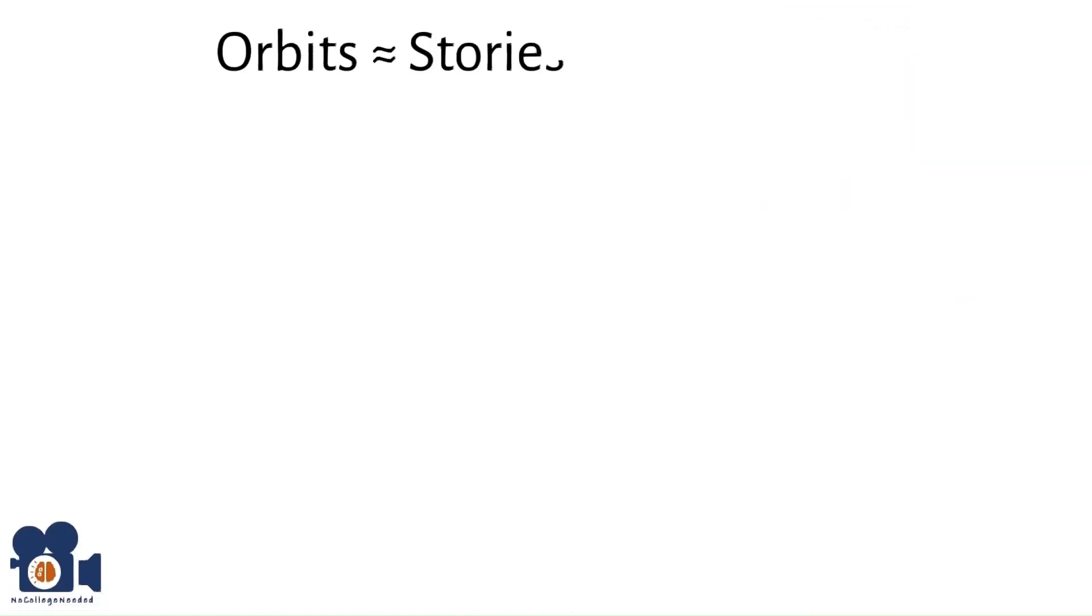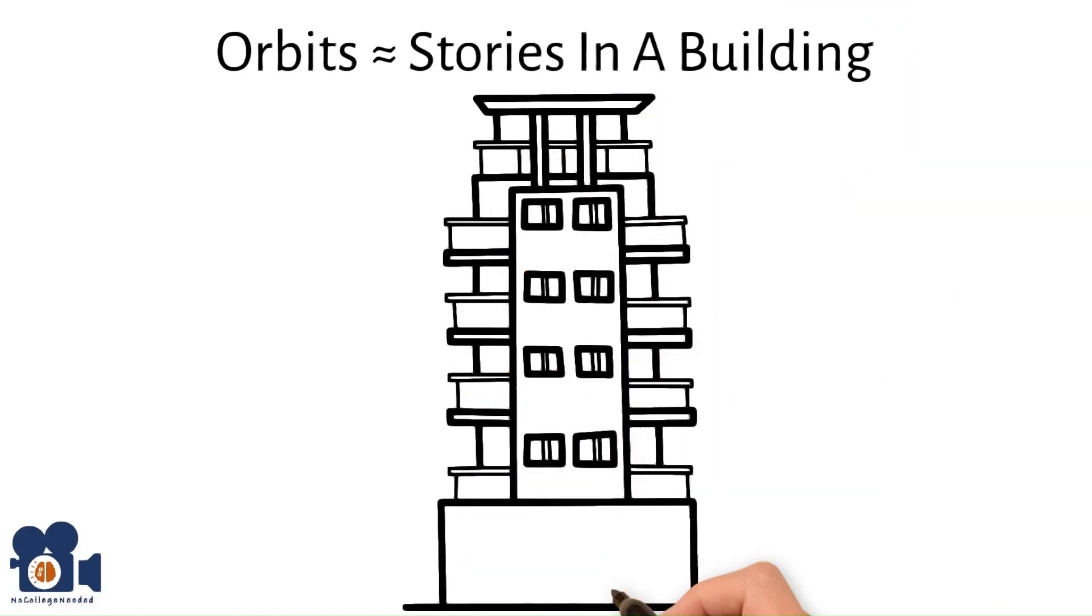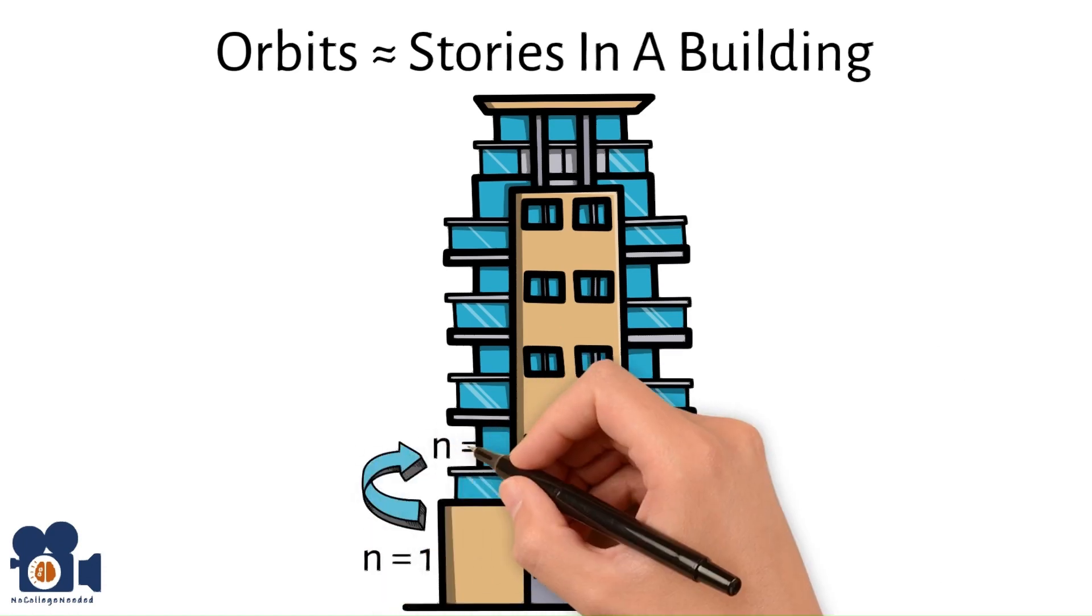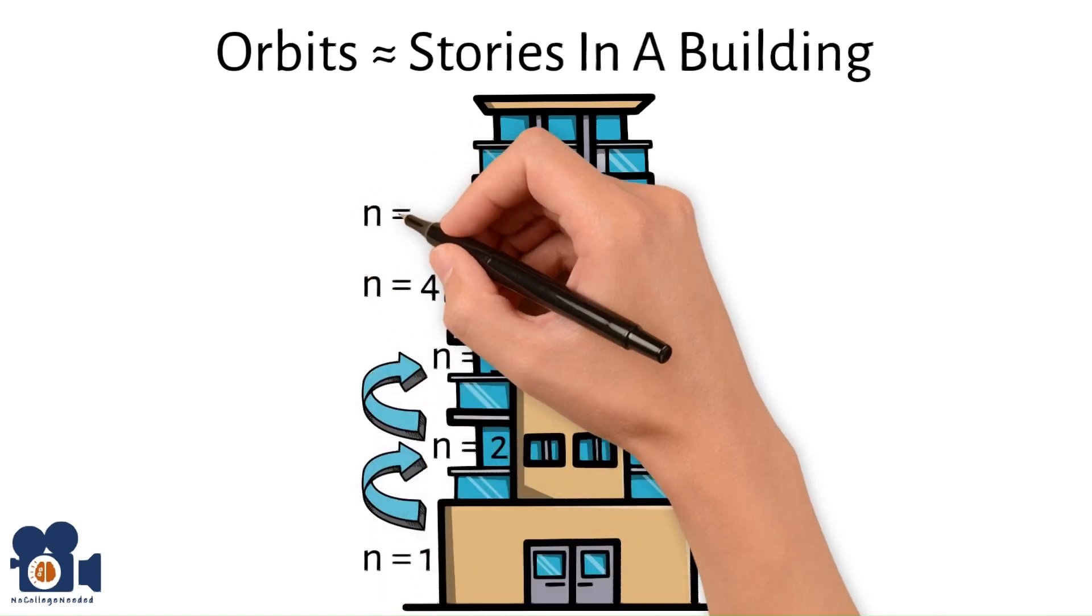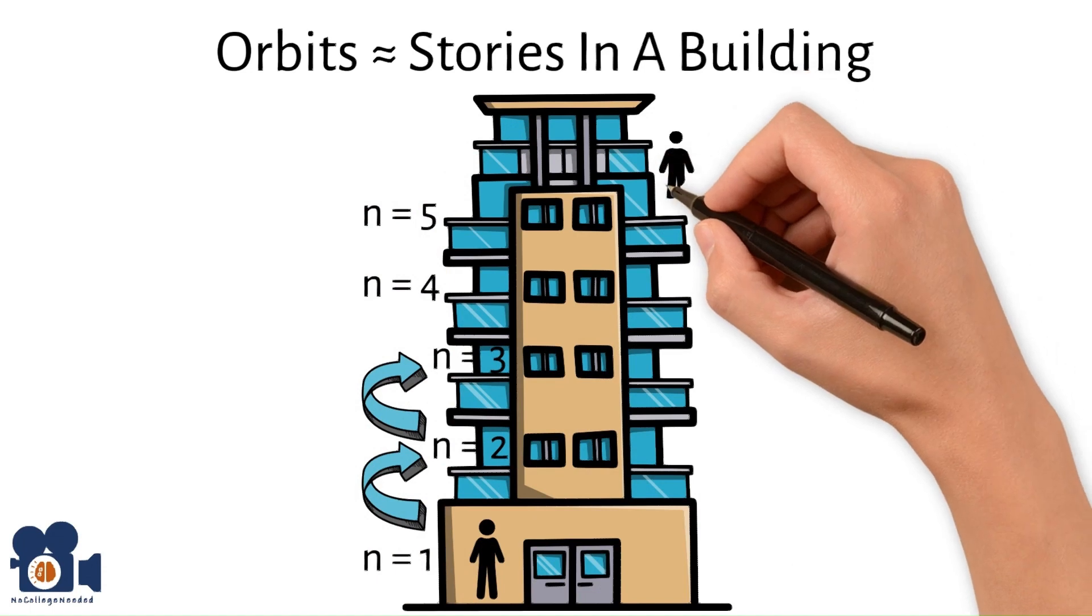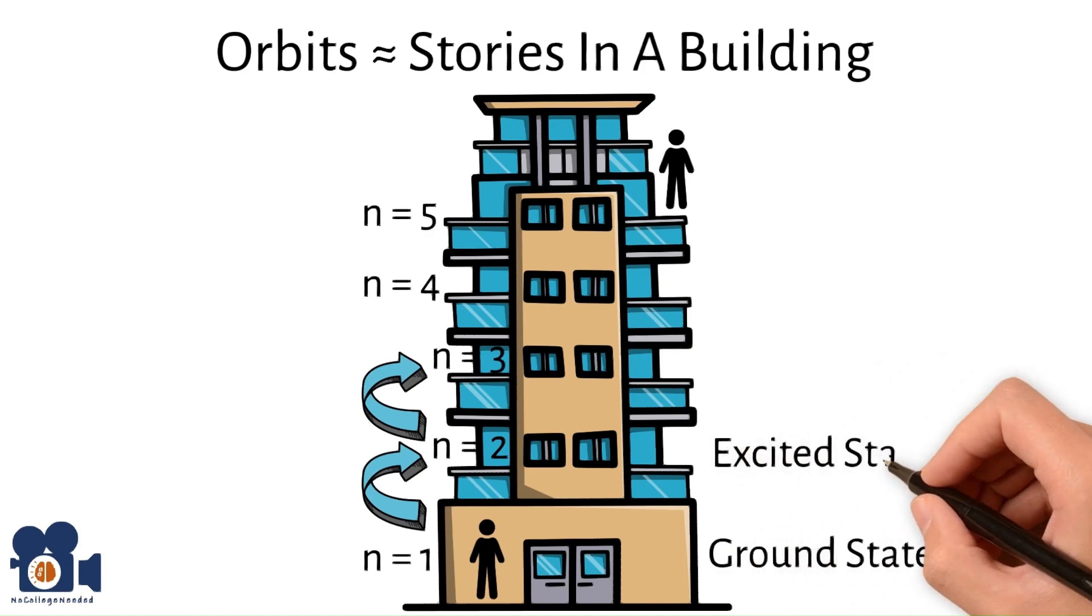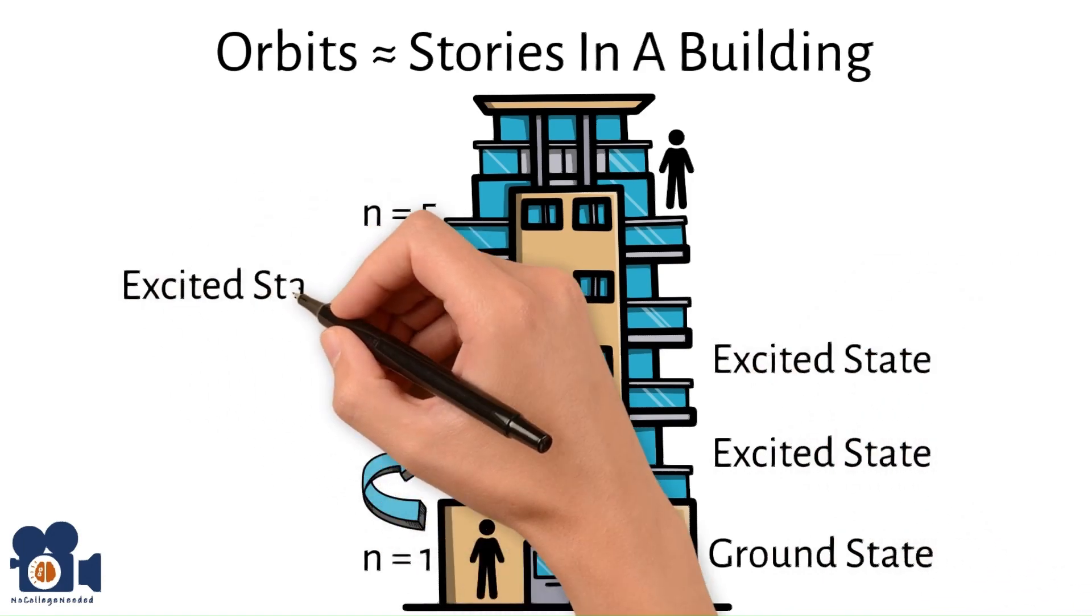This situation is analogous to stories in a building, where the bottom floor is where n equals 1, and as you move up floors, n increases to 2, 3, etc. Just like in a building, the higher you go up, the more energy you have. Due to this, science came up with the term ground state for electrons on the lowest level and the atom's most stable state. States with n greater than or equal to 2 are considered excited states, indicating higher energy levels.